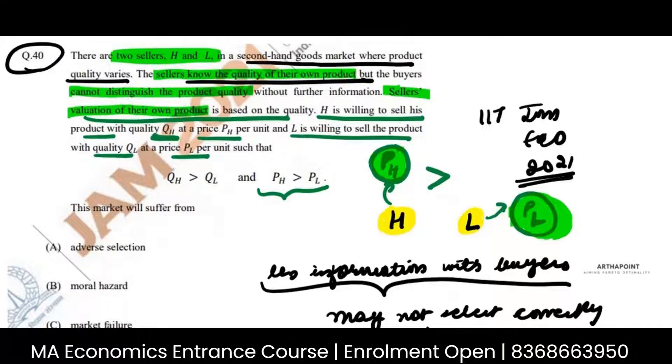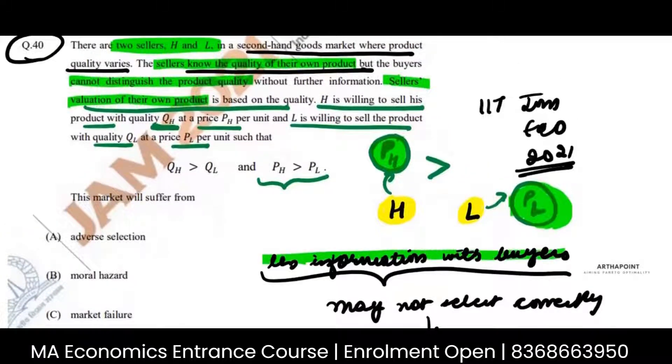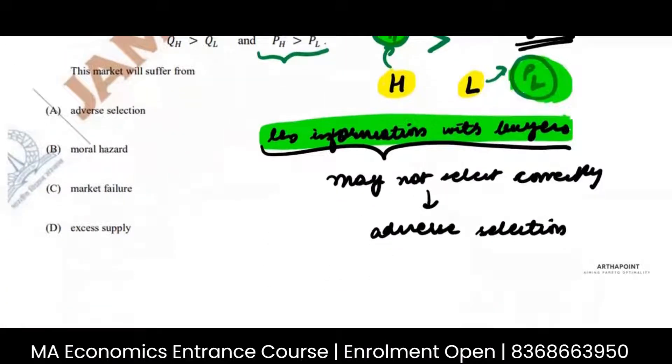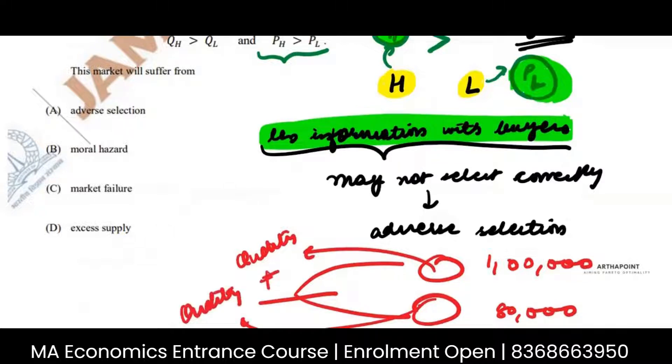Right? So there is still less information with the buyers. They do not know whether this valuation is correct or not. So it is like this. You go to buy a second-hand car. There are two people. One says I am going to sell my car for 1 lakh, and the other says I am going to sell my car for 80,000. You know, I do not know what quality is this and what quality is this.